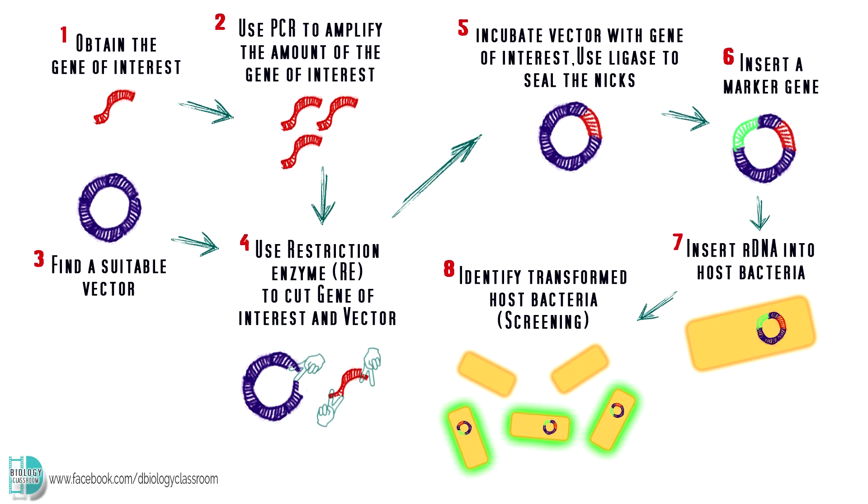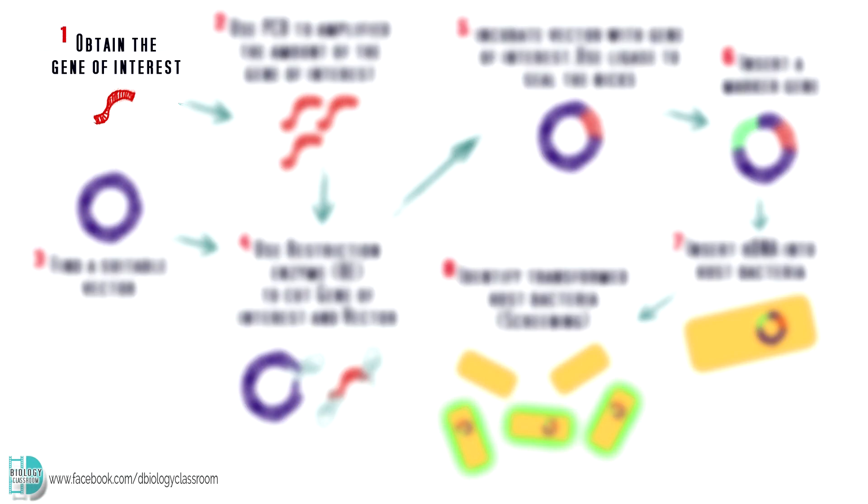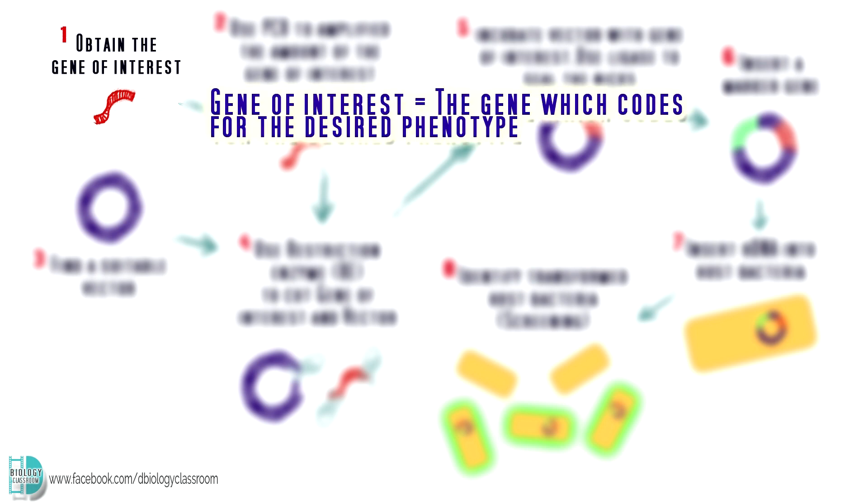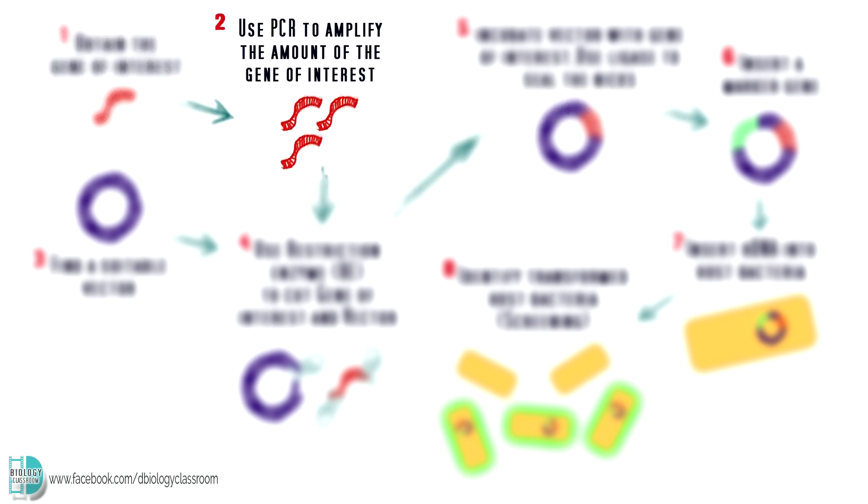These are the steps involved when you want to produce bacteria which are capable of synthesizing human insulin. First, you have to obtain the gene of interest. This is the gene which codes for the product you want the host cells to produce in the end. So in this case, it is a human insulin gene. Then, amplify its number by a process called polymerase chain reaction, PCR.